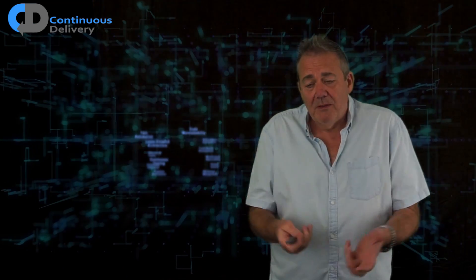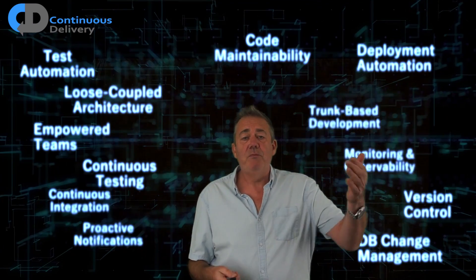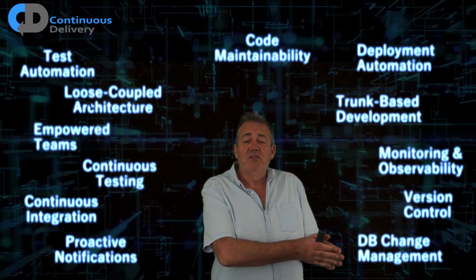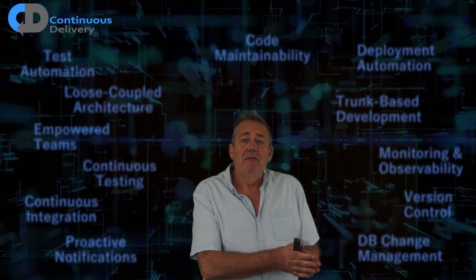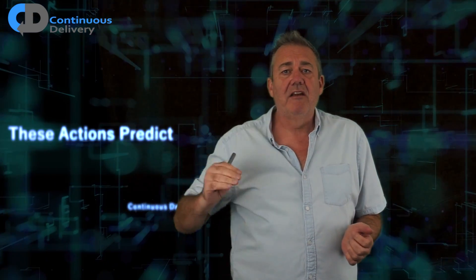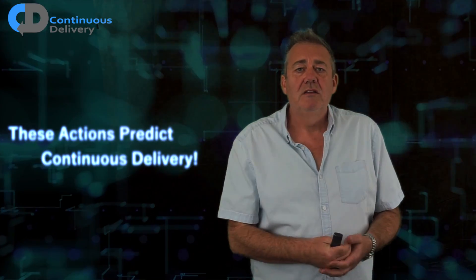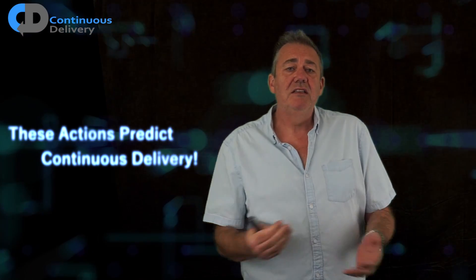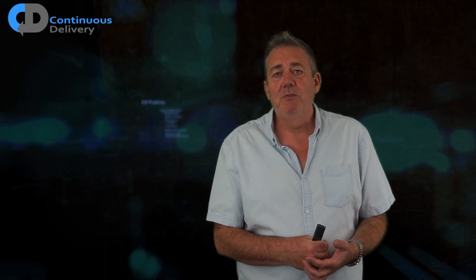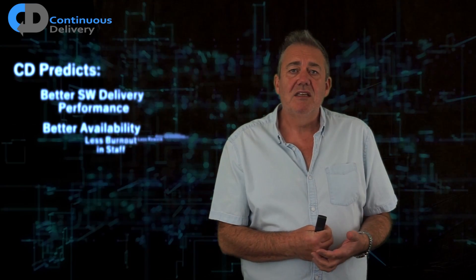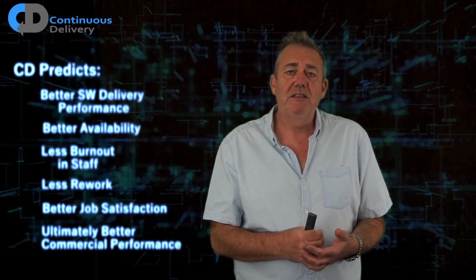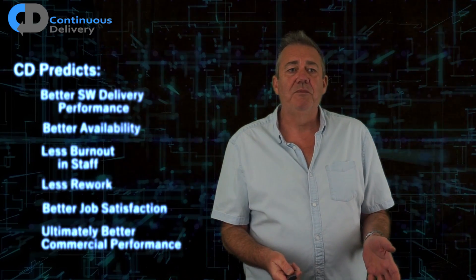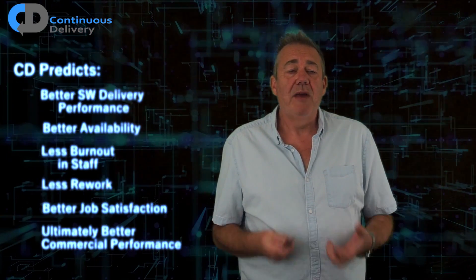The DORA model, in addition to identifying the characteristics of high-performing teams — high measures in throughput and stability — also gives us a correlative model. If you perform certain kinds of actions, the DORA model can correlate those actions with where you'll sit on the scale of performance. If you are committing changes to mainline multiple times per day, that will have an impact on stability and throughput. If you are releasing into production more frequently, or adopting high levels of automated testing to reduce defects, that's going to have an impact on stability and throughput. This model is important to our industry and needs to be more widely adopted.